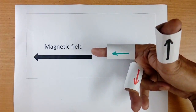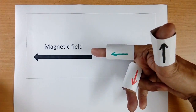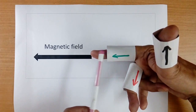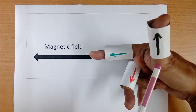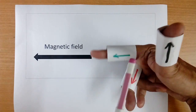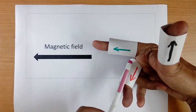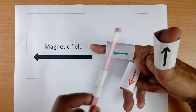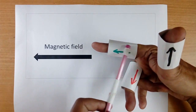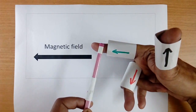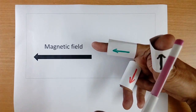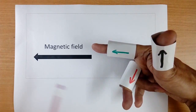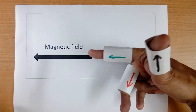Now suppose we have two things. One is magnetic field, which is flowing in this direction, and motion in this direction — then electricity will flow in this direction. This is the simple law of nature. I will repeat again: if magnetic field is in this direction, motion in this direction, then electricity can be generated in this direction.